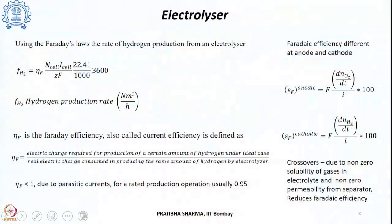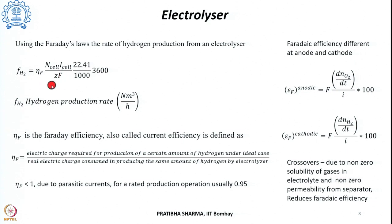The obvious question when we have a stack is how much hydrogen can be produced. Using Faraday's law, the hydrogen production rate in normal meter cubed per hour is given by: η_F × N_cell × I_cell / (Z × F), multiplied by certain conversion quantities. Here η_F is the Faraday efficiency, N_cell is the number of cells, I_cell is the current per cell, Z is the number of electrons transferred, and F is Faraday's constant.